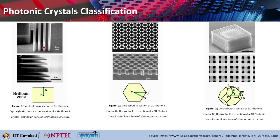This is the vertical cross section of the 1D photonic crystal and this is a horizontal cross section of the same. You have some material and then air, material, air and so on. This is the Brillouin zone of the 1D photonic structure. The center is marked as gamma and the middle of this particular edge is marked as X — these are the two important points in this 1D photonic crystal.